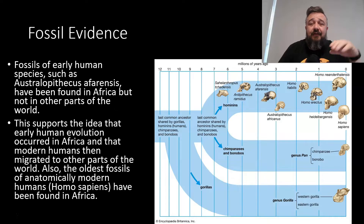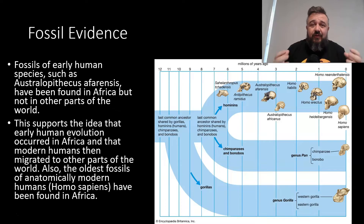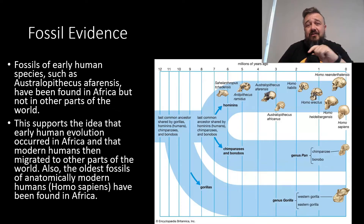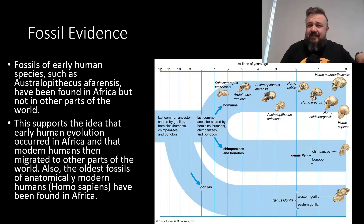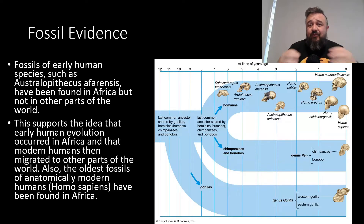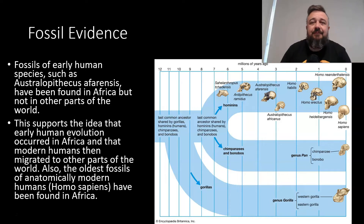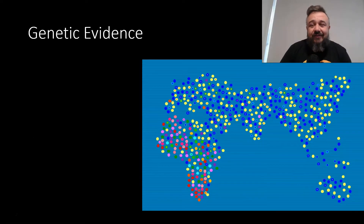We find Homo sapiens fossils across the world, but the oldest ones are found in Africa. The closer you get to Africa, the older the fossils you're going to find. Then you've got the Middle East and western Asia — the next round of oldest fossils are found there — and it spreads out from there.